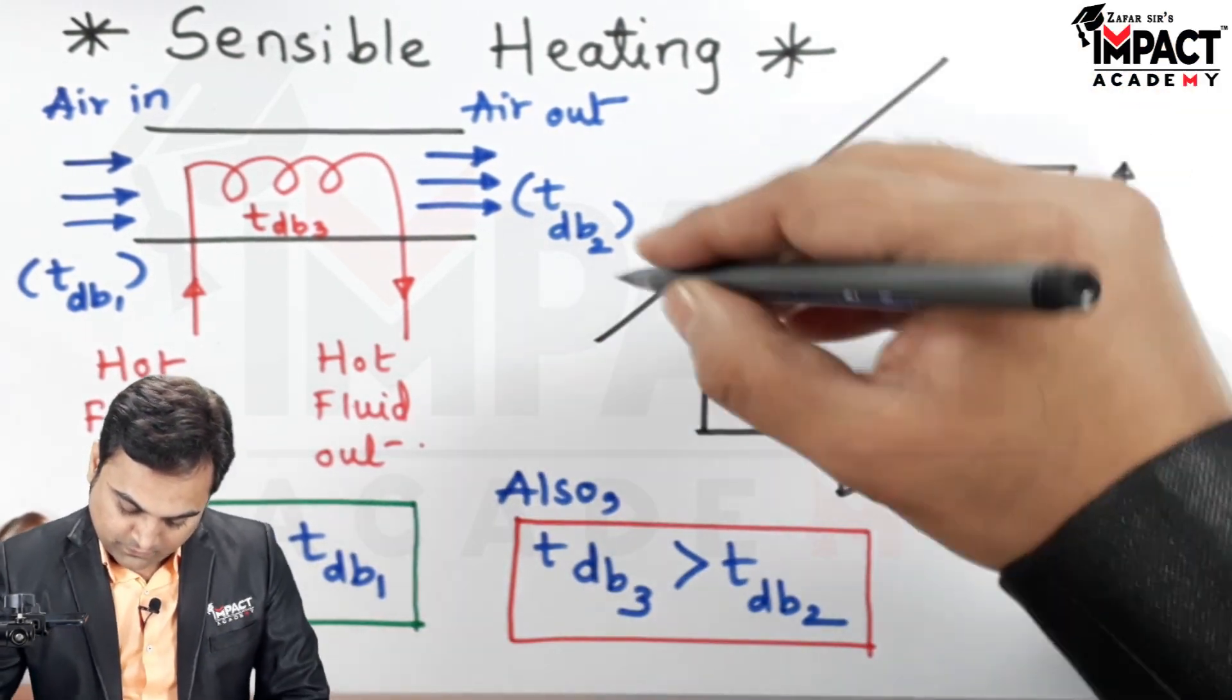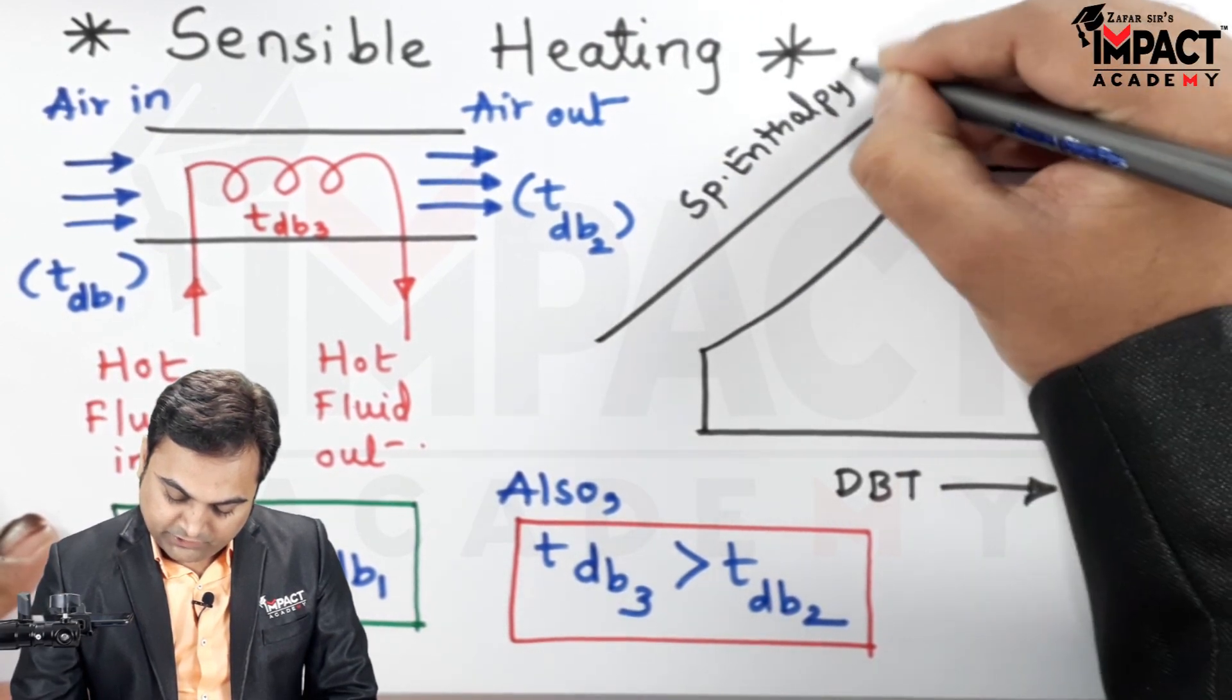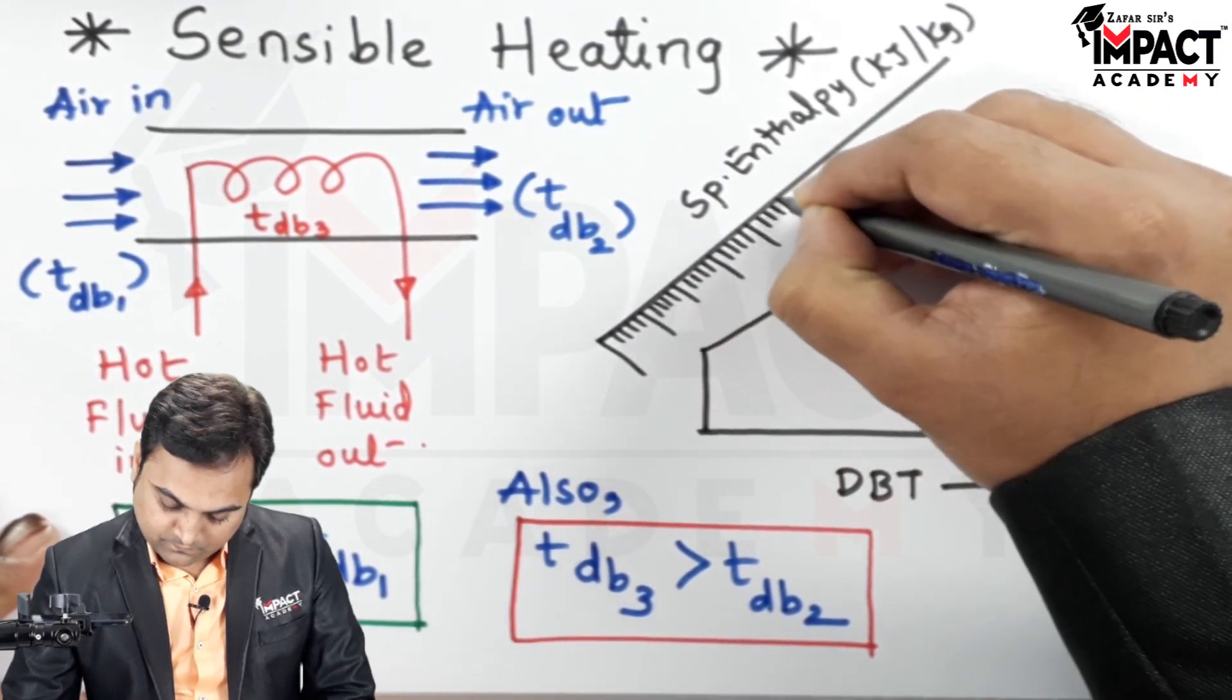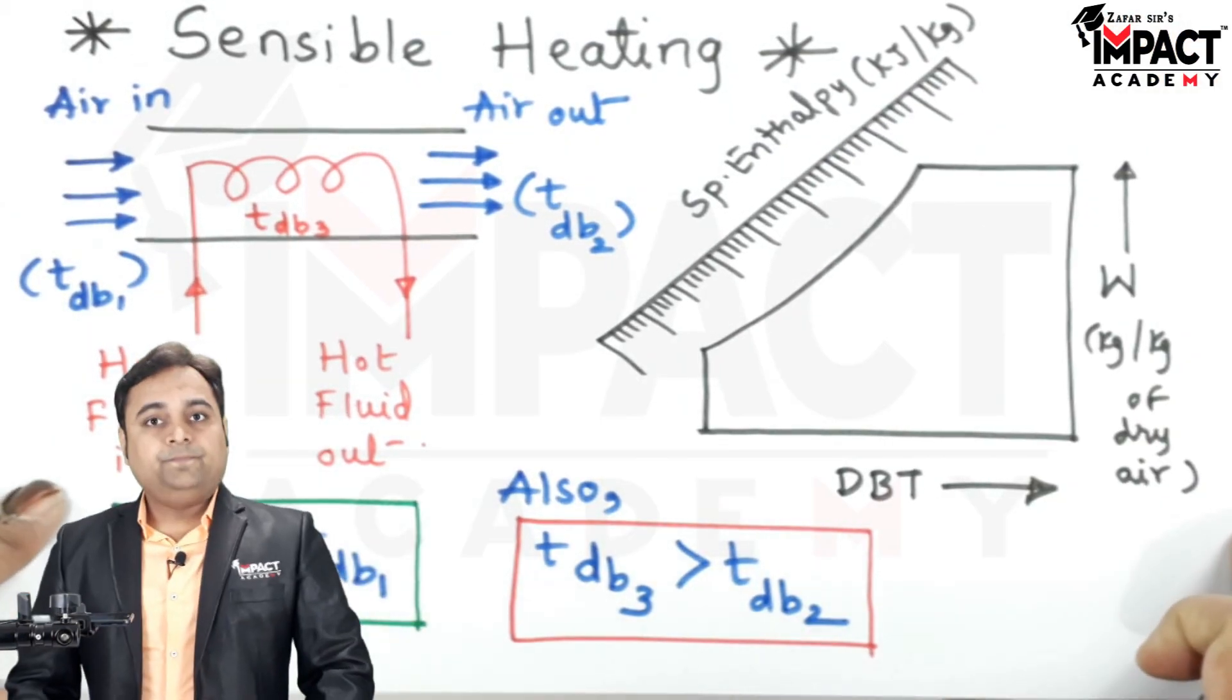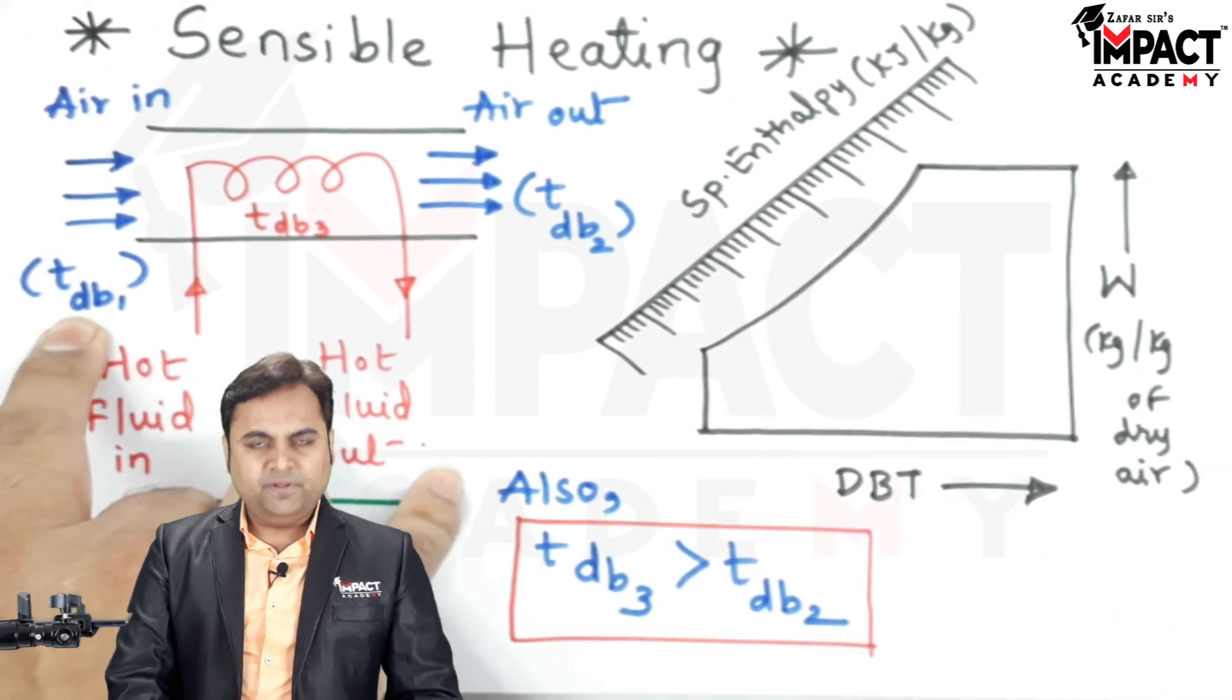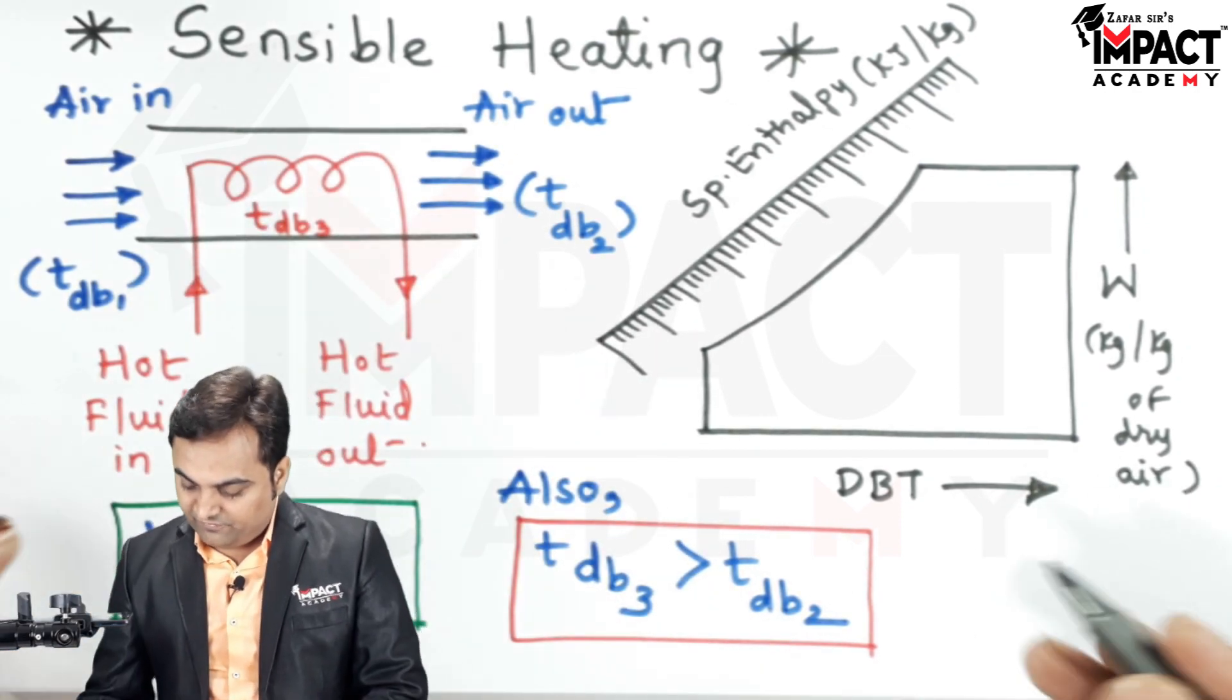Here we have a scale which would be showing the specific enthalpy for any air, unit kilojoule per kg. Then now I'll explain this process on this rough psychrometric chart which I have drawn. t_db1 is the lowest temperature out of the three temperatures, so the process will start from t_db1.